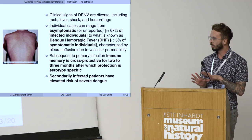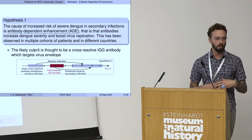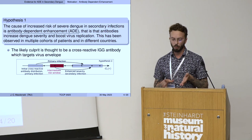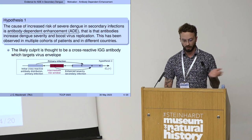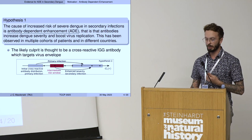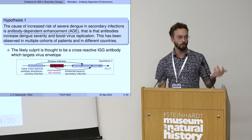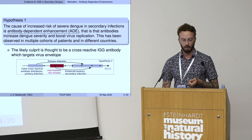The thing that motivated this work is that for some secondarily infected patients, they have elevated risk of severe dengue. There are a number of hypotheses in the literature as to why this might be the case. The one we're going to focus on today is antibody dependent enhancement, or ADE — the idea that antibodies at certain concentrations can increase dengue severity and boost virus replication. This has been observed in multiple cohorts of patients in different countries, and the likely culprit is a specific cross-reactive IgG antibody known to target the virus envelope.